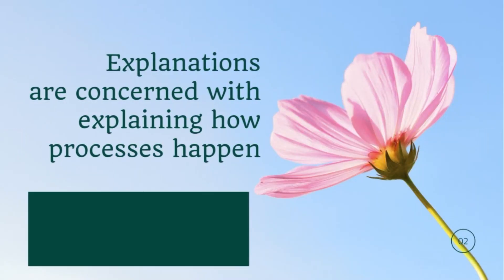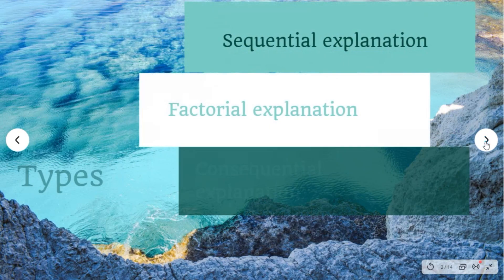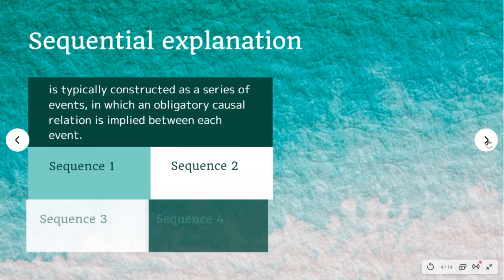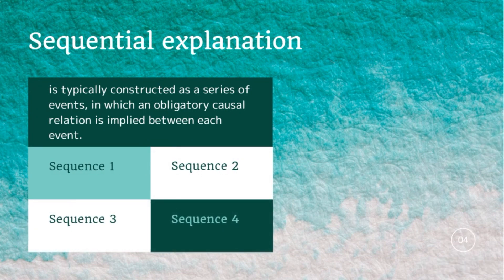Explanation text will contain a sequence of events of one of the following general types: sequential explanation, factorial explanation, consequential explanation, or conditional explanation. In this occasion, we will only focus on the first type — sequential explanation. Sequential explanation is typically constructed as a series of events in which an obligatory causal relation is implied between each event. This type will be discussed further after we review the elements of explanation.